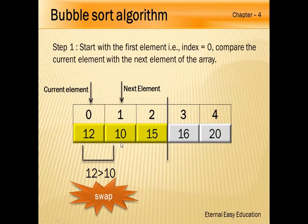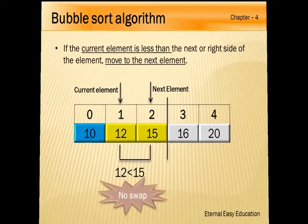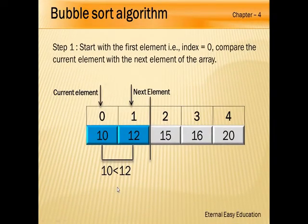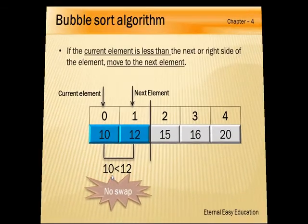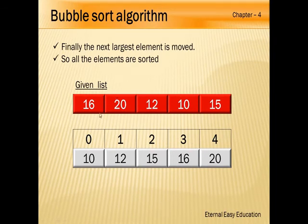Now consider only indices 0 to 2. Compare 12 and 10 — 10 is less, so swap. Compare 12 and 15 — 15 is greater, so no swapping. We move to the next iteration. Now 20, 16, and 15 are arranged at the end. Only index 0 and 1 remain: 10 is less than 12, so swap. The list is now sorted as 10, 12, 15, 16, 20.